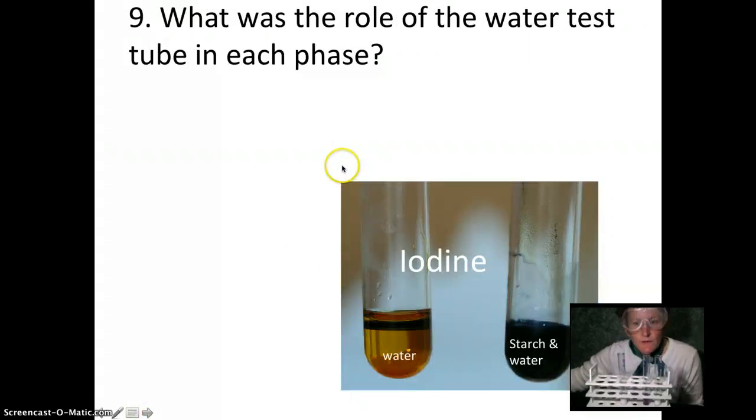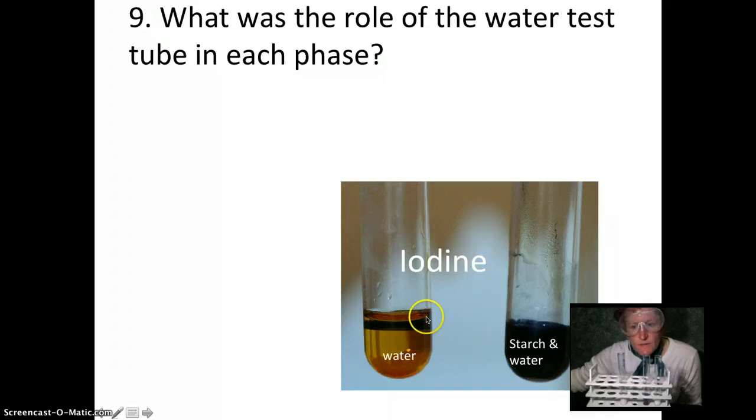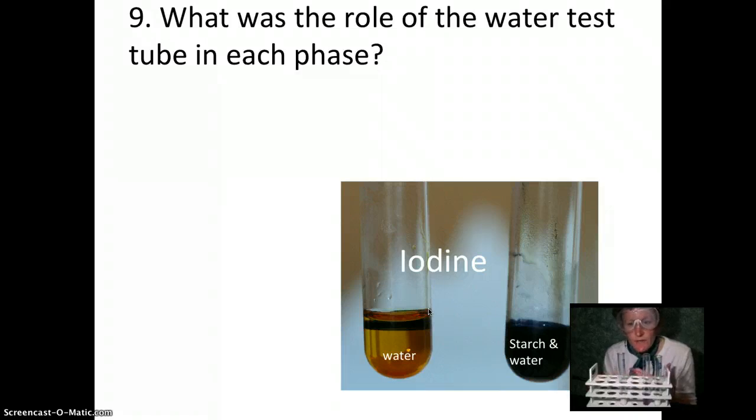Nine, what was the role of the water in the test tube? Well, I have a picture of iodine here. The water is used as a comparison. Iodine is pretty dark, but when you put it in a solution it's going to dilute a little bit and the color is going to change. So we put it in water as a comparison or control. Water is a control. We just want to see what the indicator looks like when it is diluted in water. We know there are no macromolecules, it's just plain water.